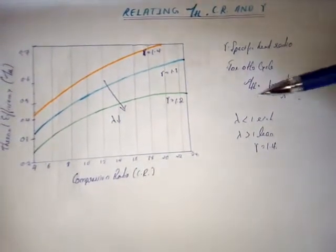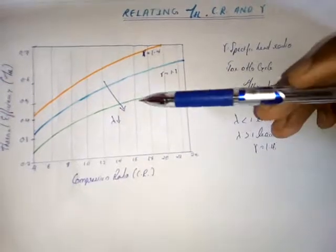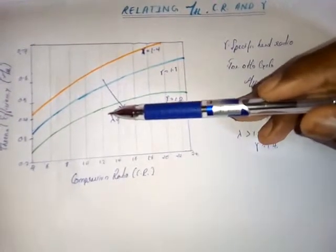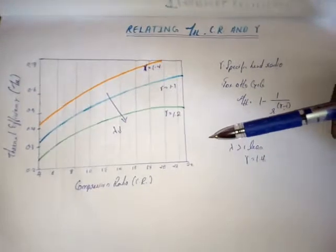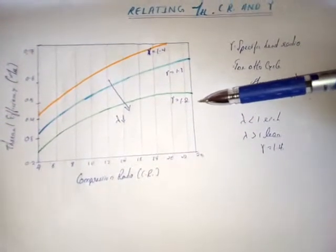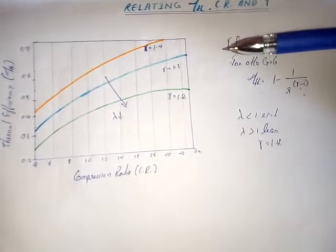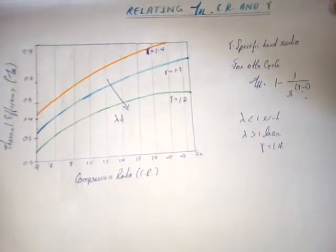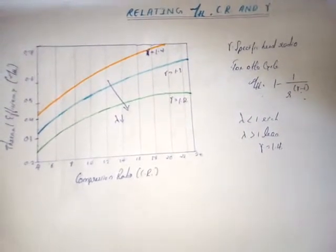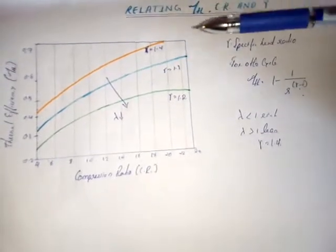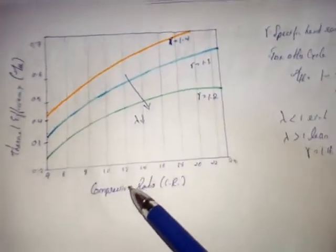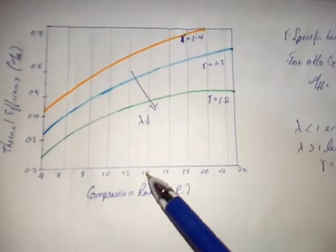As the compression ratio increases, the thermal efficiency also increases. But for different limits of compression ratio, the rate of increase of thermal efficiency is different for different compression ratios.